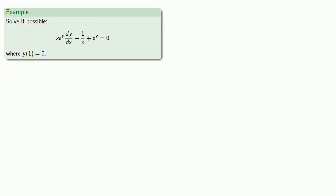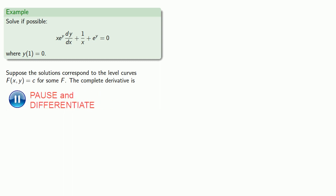Let's see if we can solve this differential equation where y of 1 is equal to 0. We start with the assumption: suppose the solutions correspond to the level curves f of xy equals c for some function f. Then we can find the complete derivative, and since both of these are equal to 0, we can now compare our two equations.